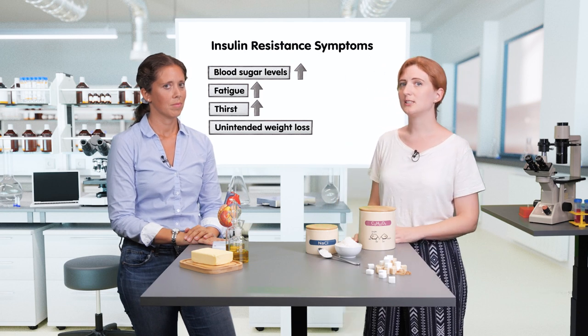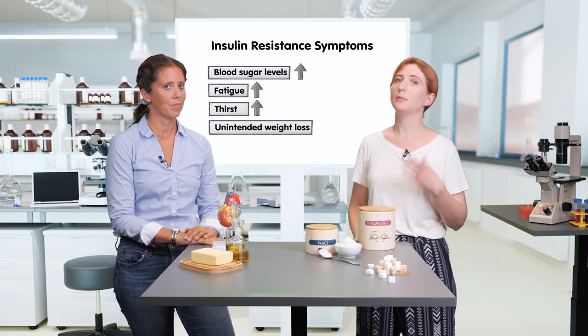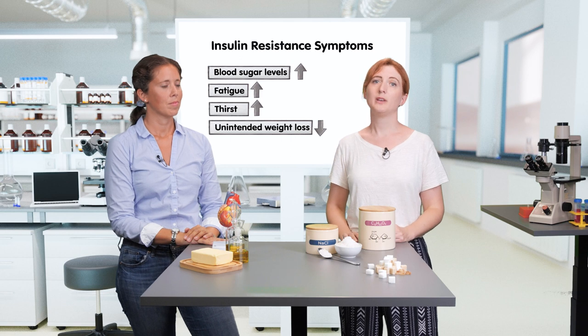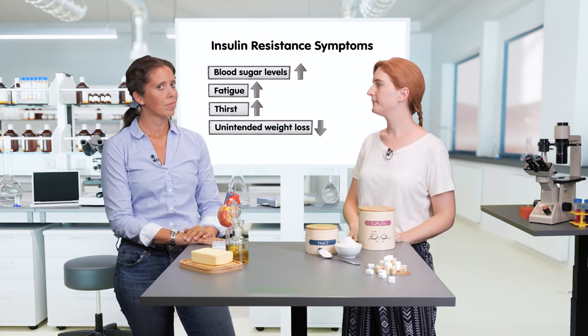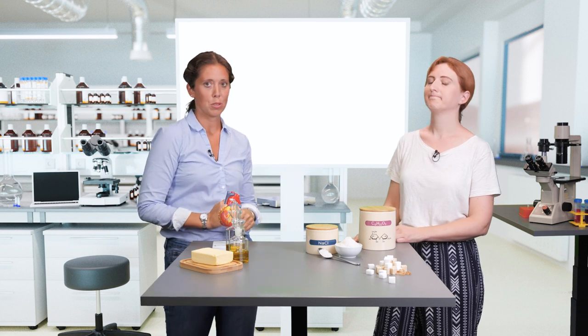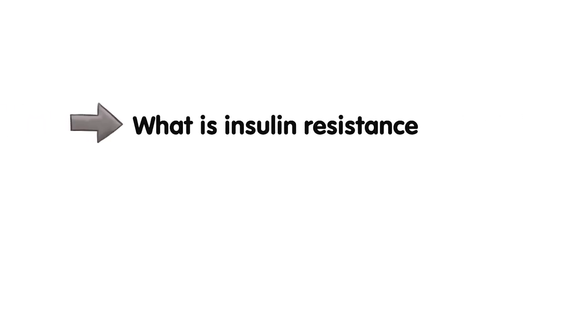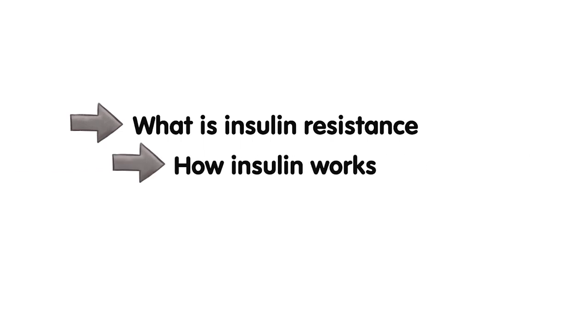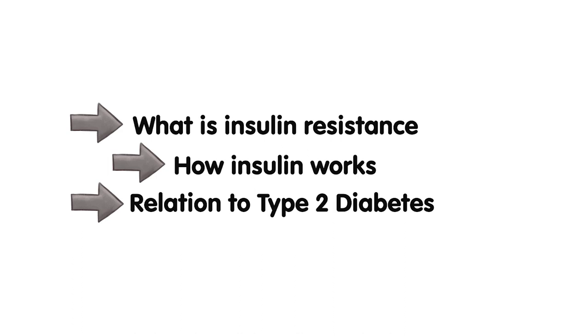People with insulin resistance also often suffer from unintended weight loss when the disease manifests. But the question is, why do we have these symptoms? The explanations will be given throughout this course. So let's sum up what we discussed in this video. We talked about what insulin resistance is, how insulin works, and last but not least, how insulin resistance is related to type 2 diabetes.